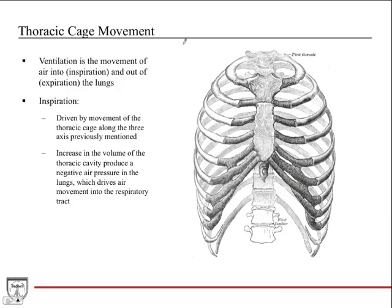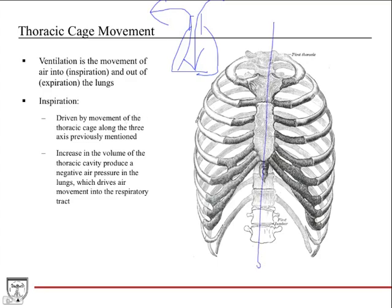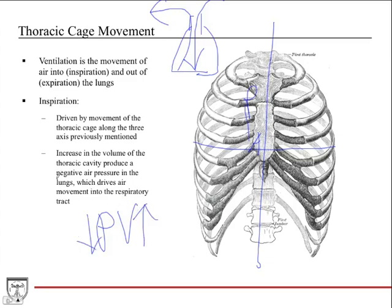Ventilation, by definition, is the movement of air into and out of the lungs — inspiration in, expiration out. Inspiration is driven by movement of the thoracic cage along the three axes, which expands the cage and produces negative air pressure in the lungs by increasing the intrathoracic volume. Since pressure and volume are inversely related, increasing volume decreases pressure, creating a gradient that drives air into the respiratory tract from the atmosphere.